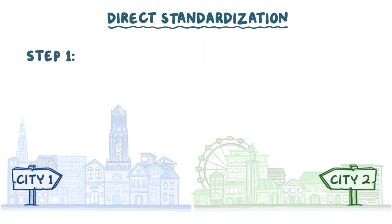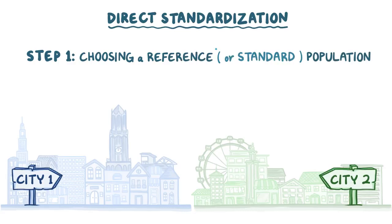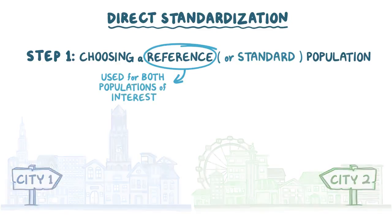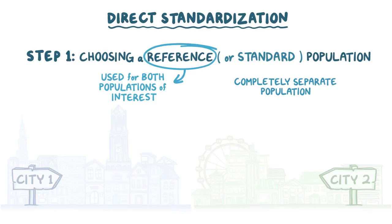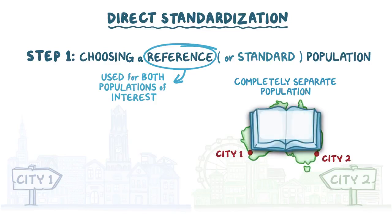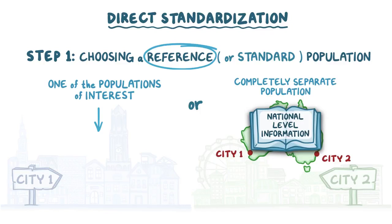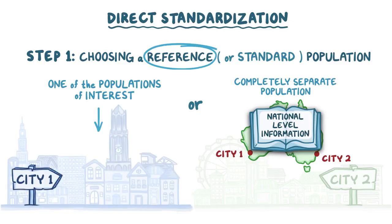The first step in direct standardization is to choose a reference or standard population, which is the population whose age distribution will be used for both populations of interest. The reference population can be a completely separate population — for example, if comparing two cities within the same country, you might use national-level information. Alternatively, you can use one of the two populations of interest as the reference. In our example, let's say we choose City 1 to be the reference population.